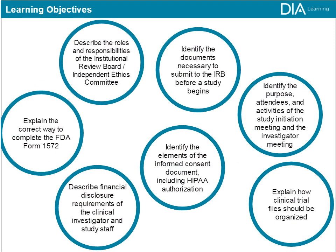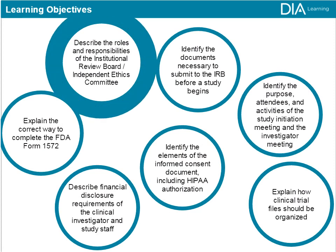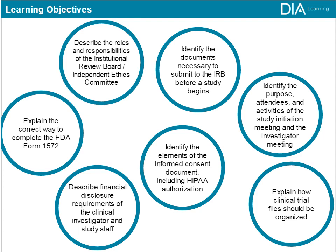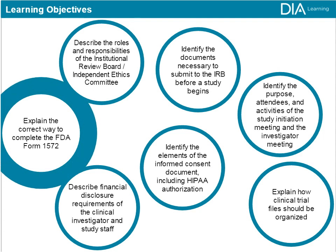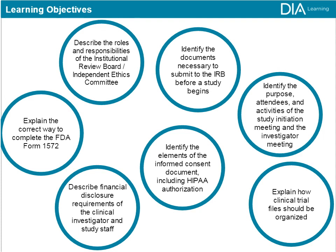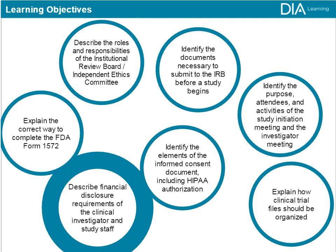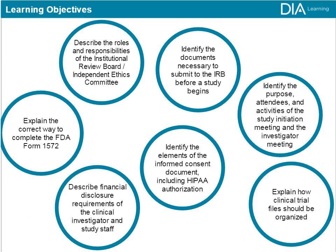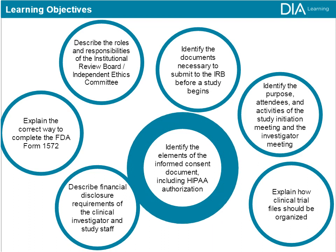After completing this activity, you should be better able to: describe the roles and responsibilities of the Institutional Review Board or Independent Ethics Committee, and explain the correct way to complete the FDA Form 1572. Describe financial disclosure requirements of the clinical investigator and study staff, and identify the elements of the informed consent document, including HIPAA authorization.